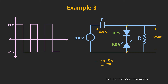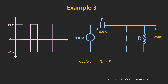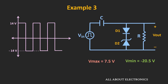Due to that, these two diodes will act as an open circuit, and this entire voltage will appear as an output voltage. So during the negative half cycle, the minimum value of the output waveform will be equal to minus 20.5V. And during the positive half cycle, the maximum value is equal to 7.5V. So for the given example, the maximum value of the output waveform is 7.5V and the minimum value is minus 20.5V.